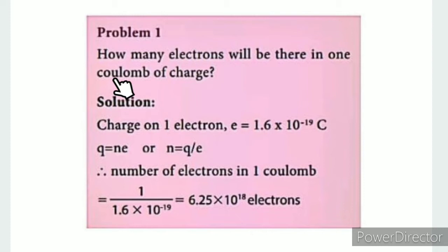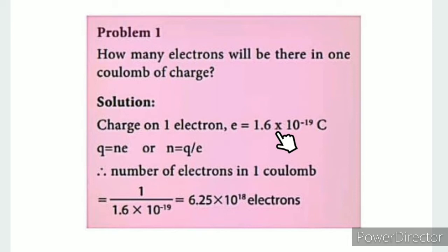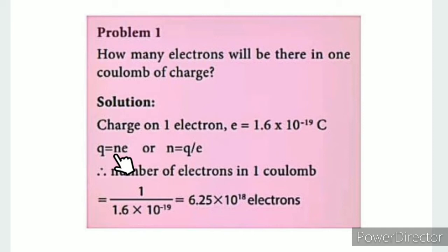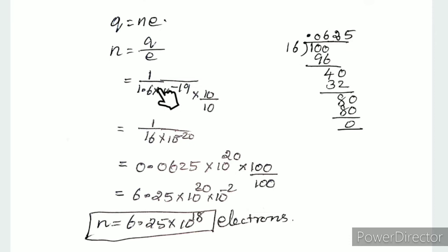Problem: How many electrons are there in one coulomb of charge? We know the charge on one electron is 1.6 × 10⁻¹⁹ coulombs. Using Q = ne, we get n = Q/e = 1 divided by 1.6 × 10⁻¹⁹.